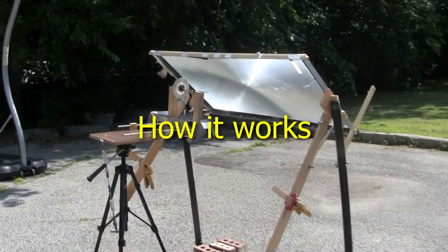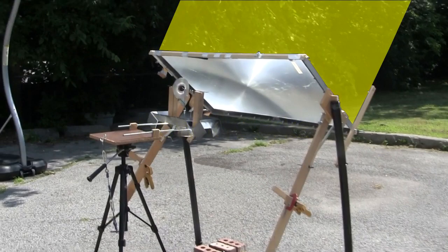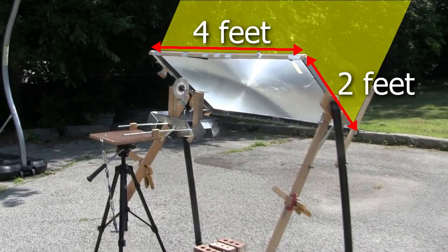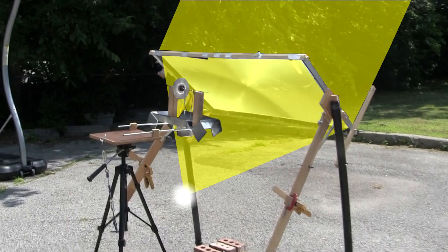For those not familiar with Fresnel lenses, they take a large area of sunlight, in this case 2 feet by 4 feet, and focus or concentrate it down to a smaller area.